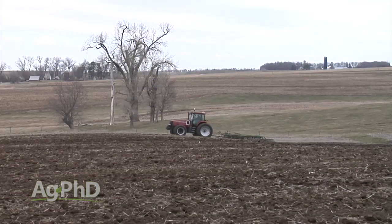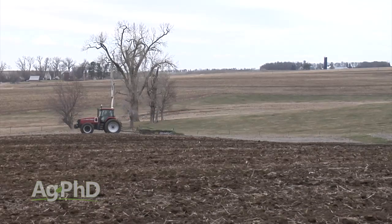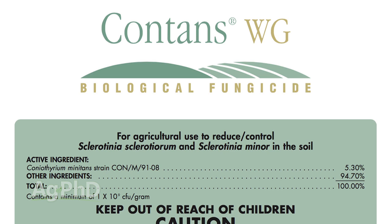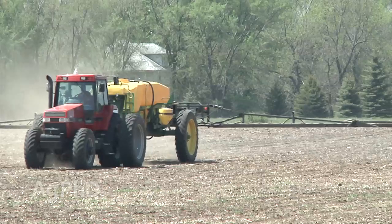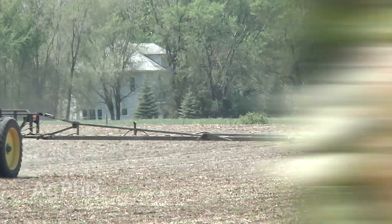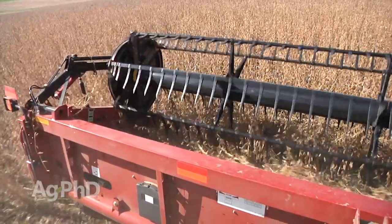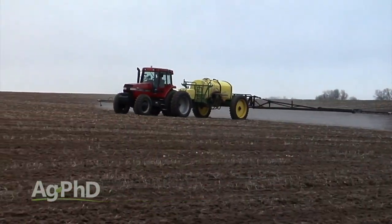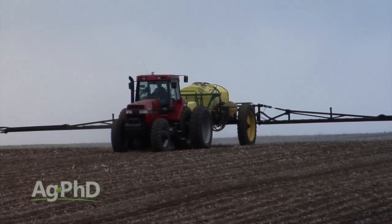Some farmers would say they'll do tillage to bury sclerotia, and that is an option. You can also use a product like Contans, a biological product that will actually feed on the sclerotia — it's the natural predator for them. If you had a white mold problem this year, as soon as harvest is done get Contans out there and let it start working. Do no tillage, leave the sclerotia in place, and let the product work. If you apply it in the fall you have that much more time before the next crop goes in the ground.